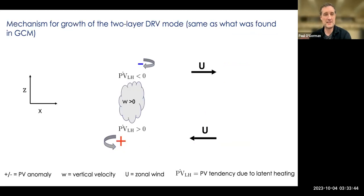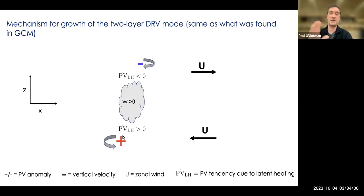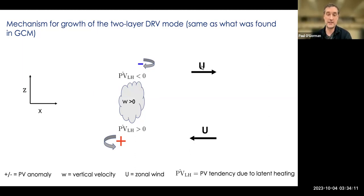The mechanism of growth is very similar to what we saw earlier: latent heating where there's upward motion, negative PV generation above, positive PV below, which generates positive PV. There's an offset that allows it to stay in the same place despite the shear. With this kind of wind profile — westerly winds — we won't actually get eastward propagation, but you could easily add a positive flow at both levels and then you would get the kind of realistic situation where storms move to the east.